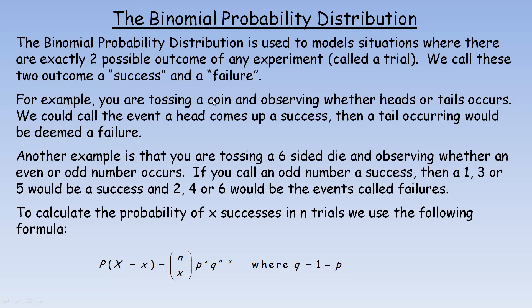For example, let's say you're tossing a coin, a normal coin that has a head and a tail, one on each side, and you're observing whether heads or tails occurs. We could call the event that a head comes up a success, and when a tail occurs that would be the opposite, so we would deem it a failure. You could call the tail a success and the head a failure. It really wouldn't matter, but you have to define it one of those two ways.